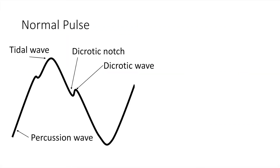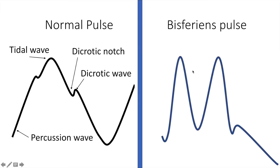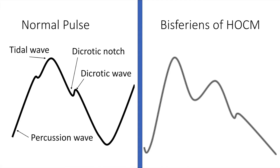This is the normal pulse waveform with its percussion wave, the tidal wave, the dicrotic notch, and the dicrotic wave. This is the bisferiens pulse — we see that there are two peaks before the dicrotic notch. Bisferiens pulse is caused because of aortic regurgitation, severe aortic regurgitation and aortic stenosis, or due to hyperkinetic circulatory states. In the bisferiens pulse of hypertrophic obstructive cardiomyopathy, the first peak is taller whereas the second peak is shorter. Both peaks come before the dicrotic notch.